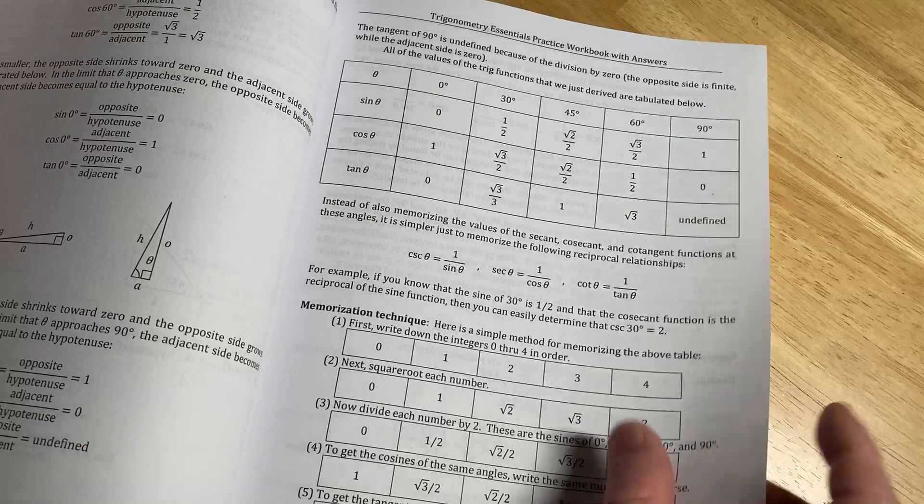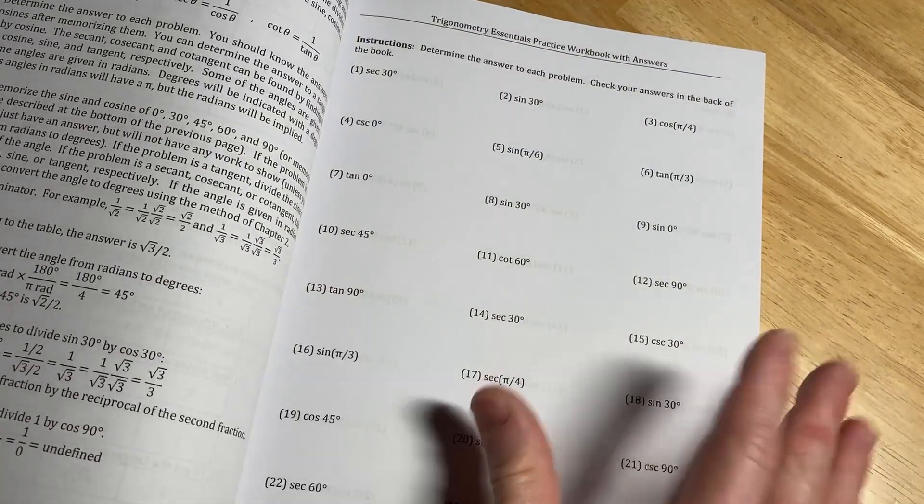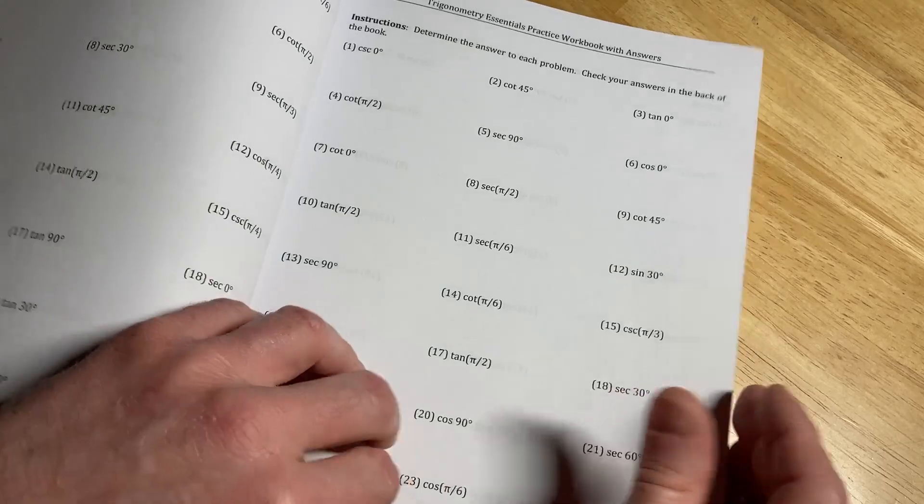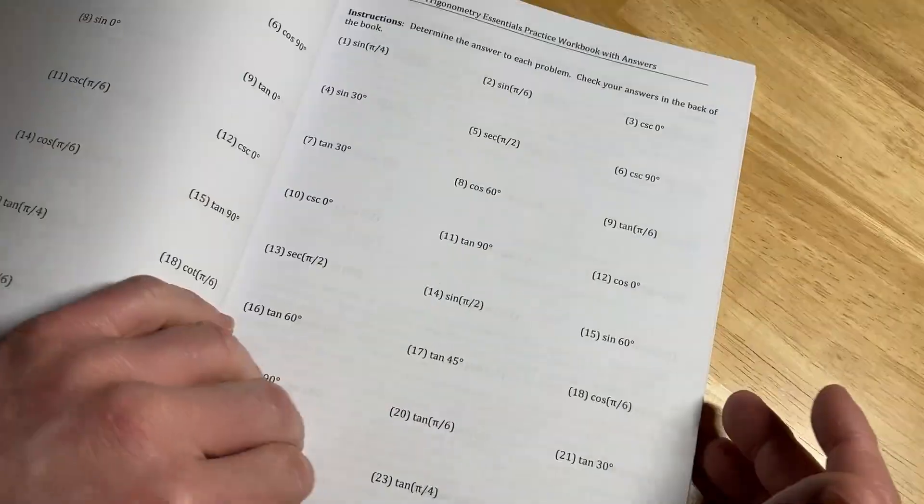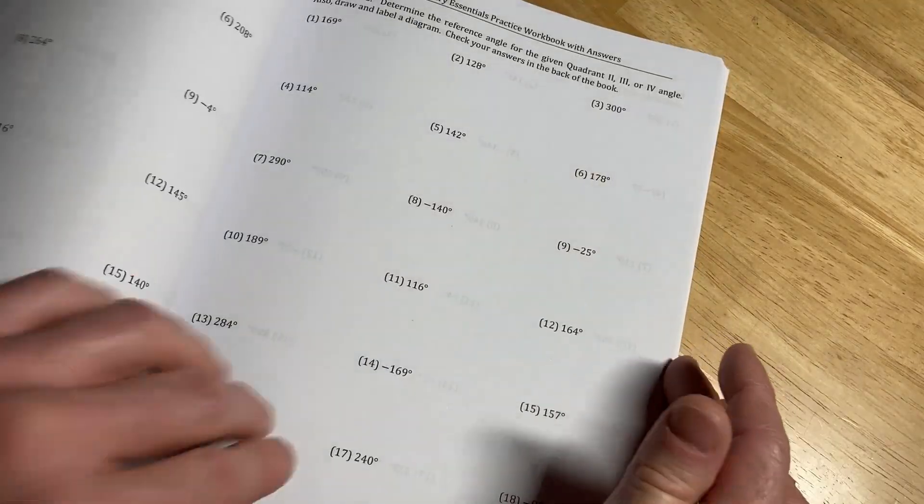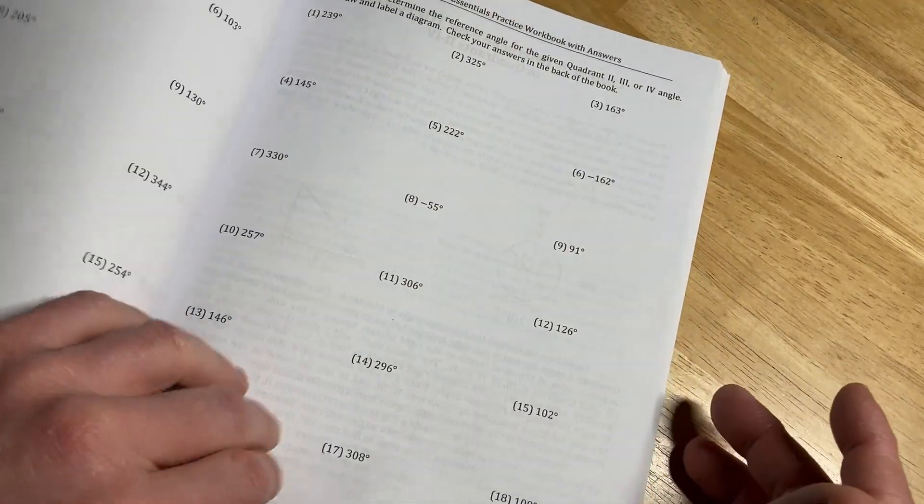Some people use mnemonics and stuff. Whatever works. Whatever works for you. My advice is just do it and memorize them. And then you've got tons of exercises. Here we go. Finding the reference angle. Good section. Tons of exercises.